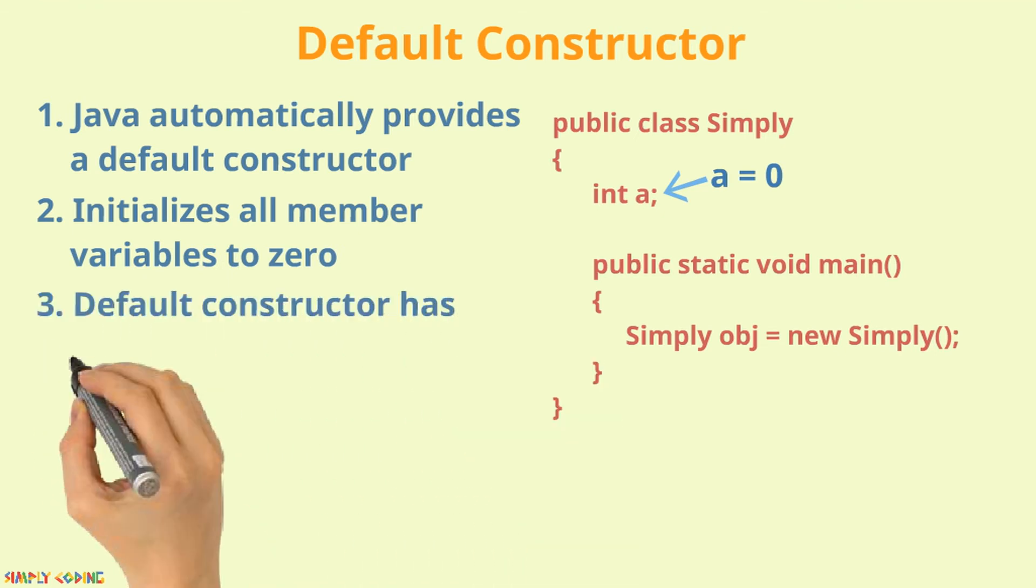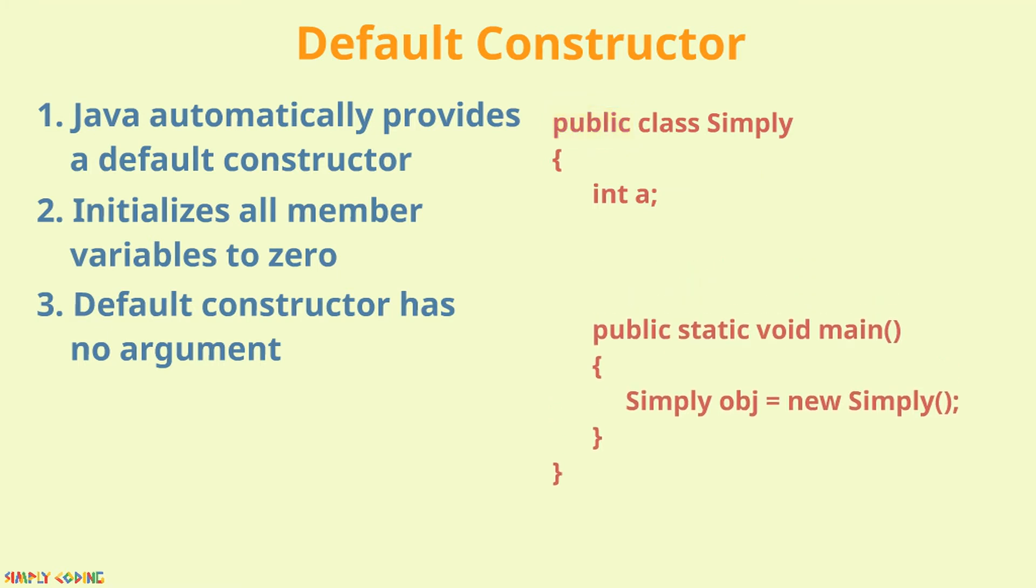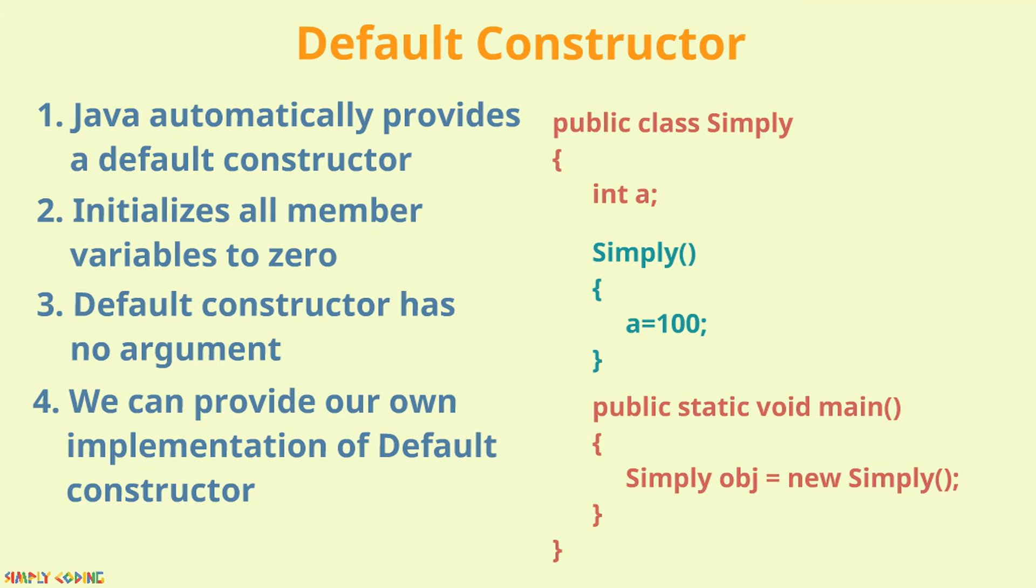The default constructor has no arguments and it has the same access modifier as the class. We can also provide an implementation for the default constructor with no arguments and initialize the member variables.